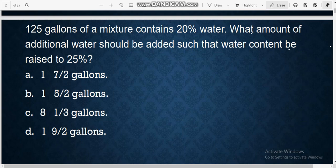125 gallons of mixture contains 20% water. What amount of additional water should be added such that water content be raised to 25%?